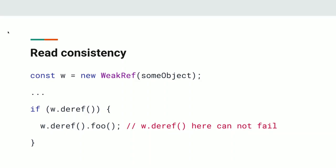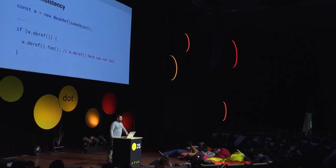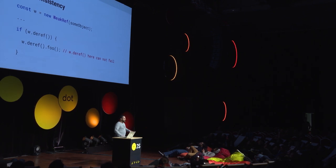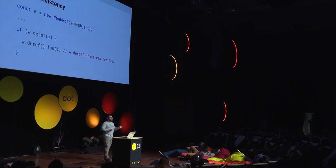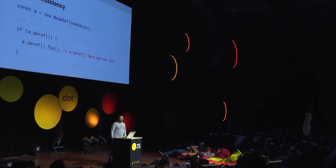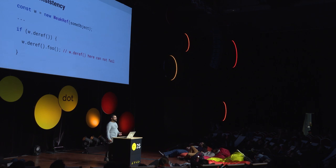Now we have some stage three features, like weak refs. Weak refs let you refer to an object without holding it alive, which could be useful for certain kinds of caches or observation patterns — you create a weak ref and call the deref method to get at it. Almost all these slides come from the actual proposals in TC39. We've been spending a long time debating all the details to make sure that weak refs work as similarly as possible between different JavaScript engines.